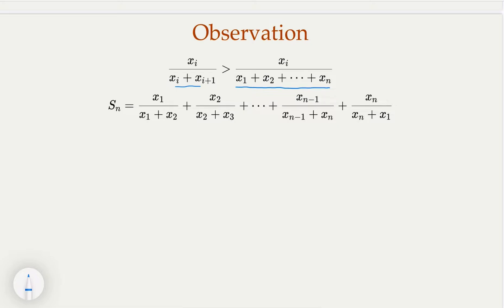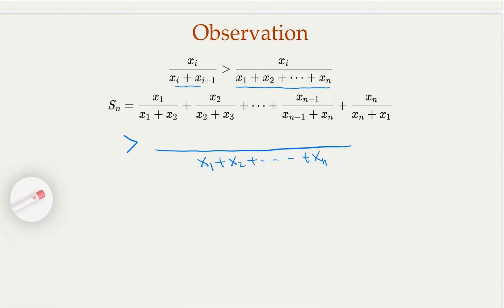In other words, Sn has to be greater than the result when we replace all the denominators with the summation of all the numbers, x1 plus x2 through xn. The numerator adds up to the same thing — x1 plus x2 plus xn — because we have n terms, which happens to be the summation of all. So that equals 1. We're done for the first part.